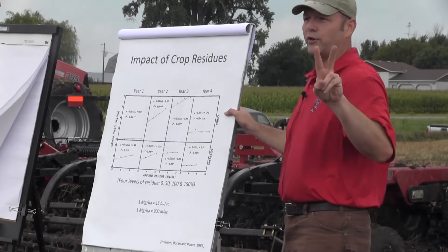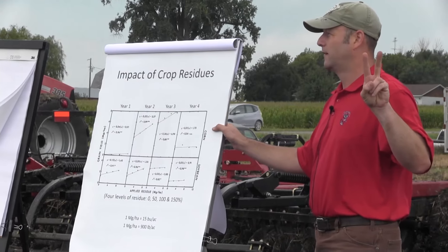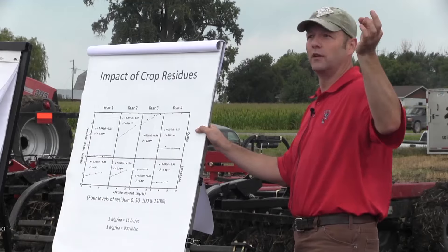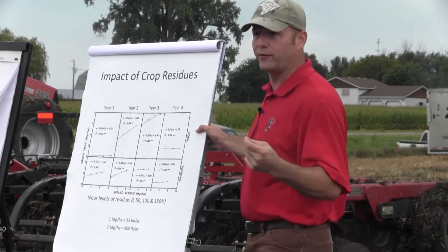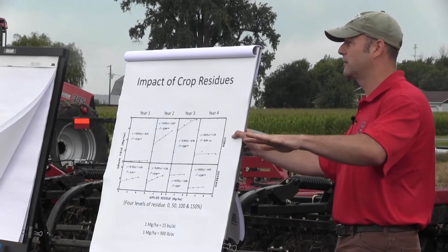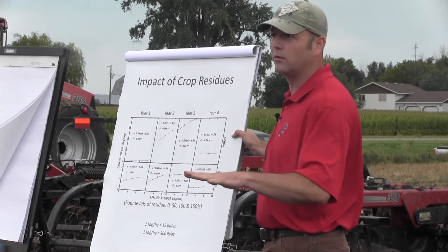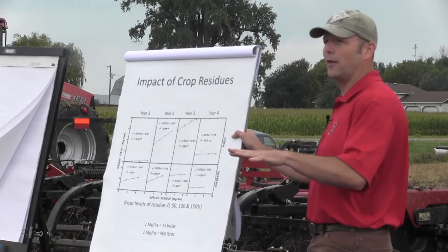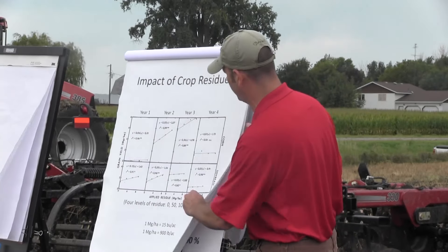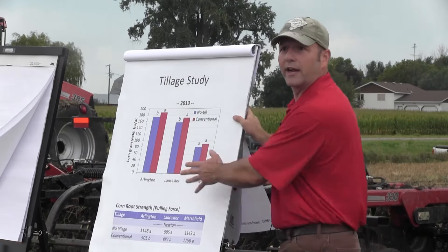Eighty percent of the yield increases in those years were attributed to two factors: moisture and temperature. When you have a lot of residue early in the season it will delay emergence, but later on during a hot and dry summer it actually helps keep canopy temperatures lower and helps with evapotranspiration, making the plant a little more efficient.